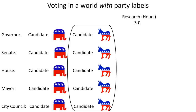Voting in a world with party labels — if you have a preference for the Democratic or Republican bundle — makes voting very, very easy. And it's even better than that. Let's assume this election was in 2022. This person put in three hours of research and was able to vote very quickly, but they're also going to be able to vote easily in the election in 2024.